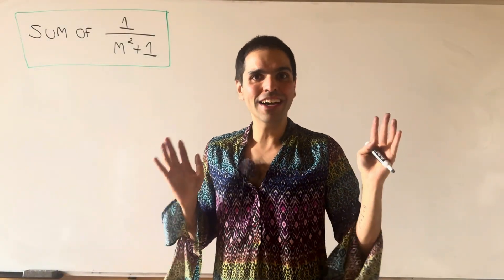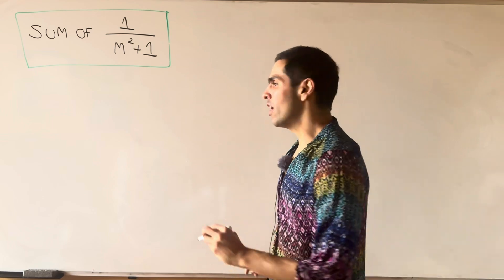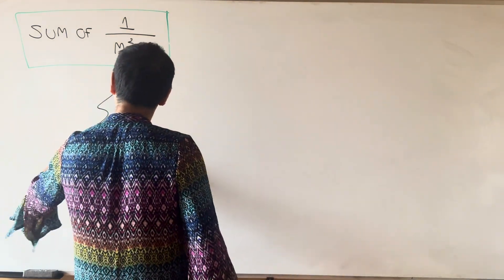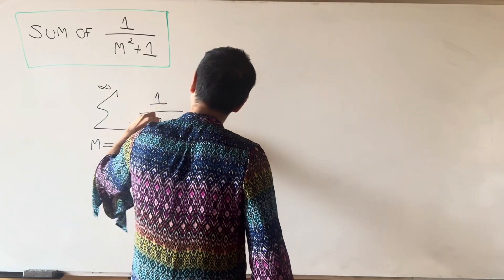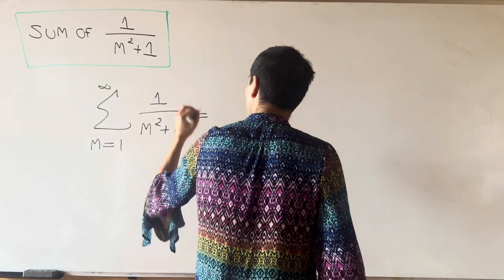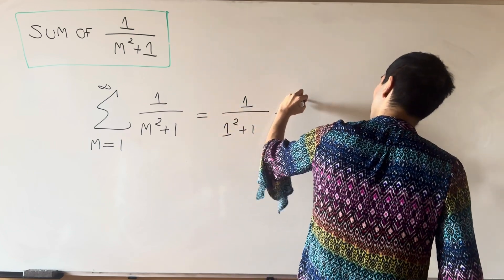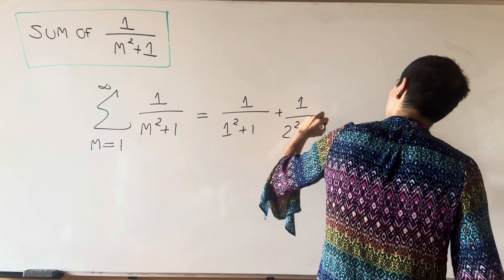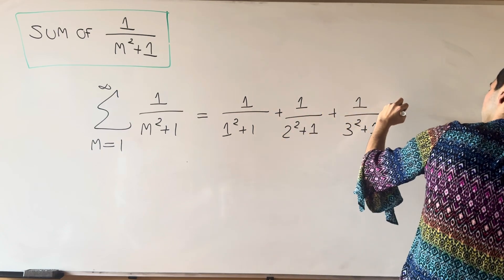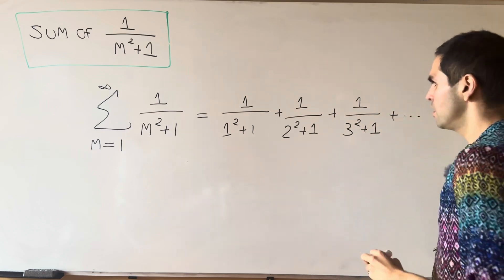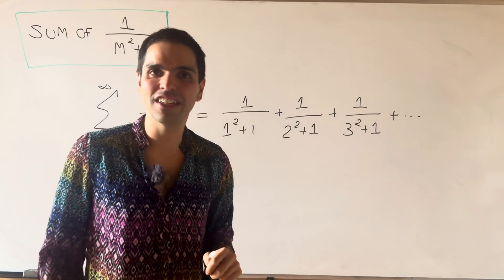Thanks for watching, and today we'll find a really, really, really cool sum, namely the sum of 1 over m squared plus 1. So our goal is to find the sum from 1 to infinity of 1 over m squared plus 1, which is really 1 over 1 squared plus 1, plus 1 over 2 squared plus 1, plus 1 over 3 squared plus 1, and so on. So almost the sum of the reciprocal squares, but you add a 1 to the denominator.